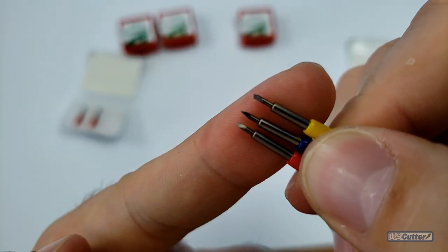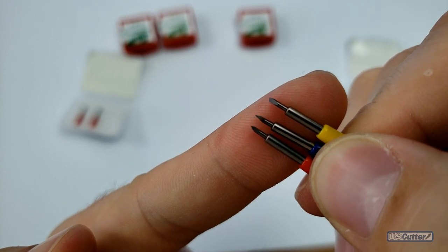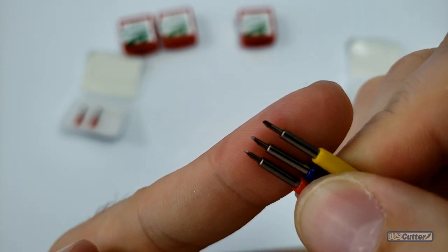When it comes to the blades, they come in three standard sizes and types. You have your 30 degree blades, your 45 degree blades, and 60 degree blades.